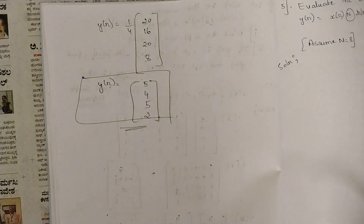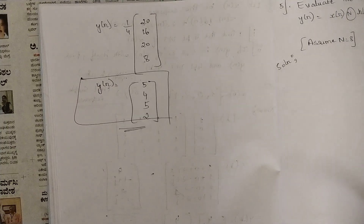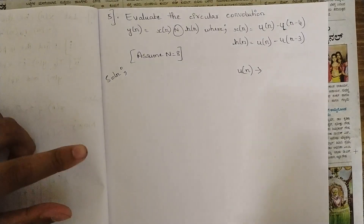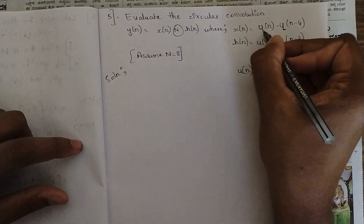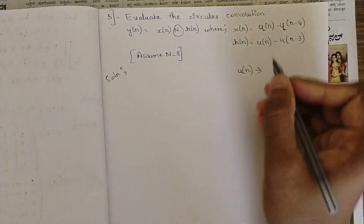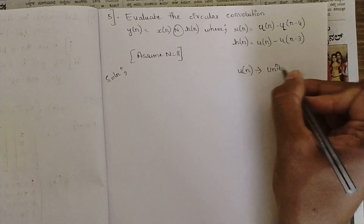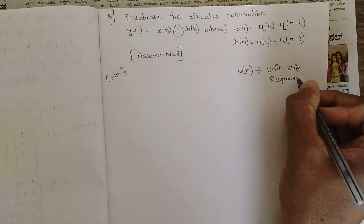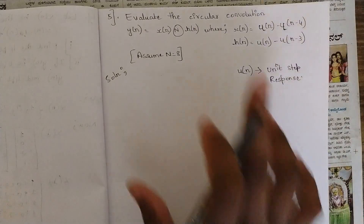In this way we solve whenever the question involves the unit sample response δ(n) using circular convolution. Now let's move to the next question — a different kind. Here, in place of δ(n) we have u(n). This is u(n), not μ. And u(n) stands for the unit step response. δ(n) was unit sample response; u(n) is unit step response.